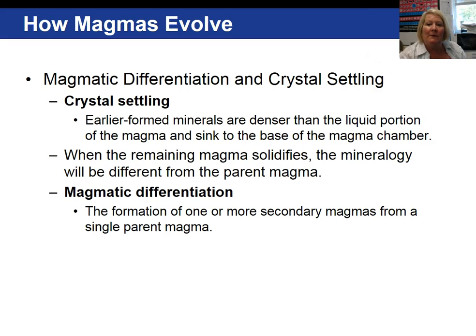Continuing with how magmas evolve, let's discuss magmatic differentiation — a process where one or more secondary magmas form from a single parent magma. This can occur by crystal settling. The earliest-formed, high-temperature minerals are heavier and more dense, so they settle to the bottom of the magma chamber. When the remaining magma solidifies, its mineralogy is different from the parent because those minerals were removed from it.